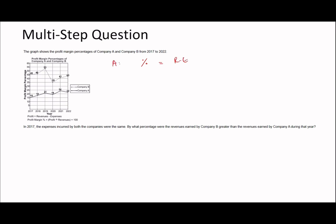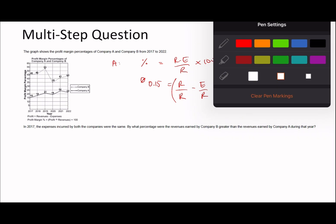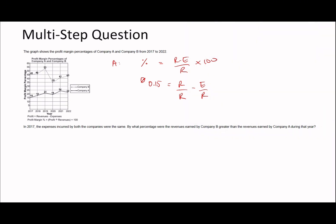Once again I'll use the same equation. Profit margin percentage for A equals the percentage, which is profit — i.e. revenue minus expenses — divided by revenue times 100. That's 15%, so bringing the 100 over gives 0.15 equals revenue minus expenses over revenue. Splitting this: 0.15 equals 1 minus E over R, therefore E over R equals 0.85 for company A.